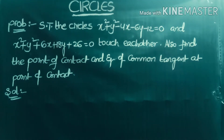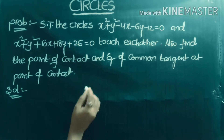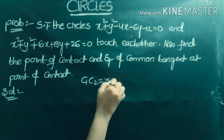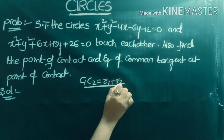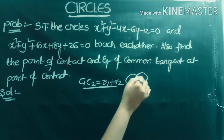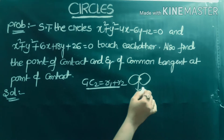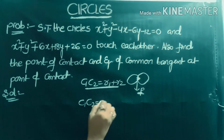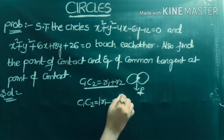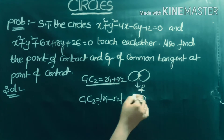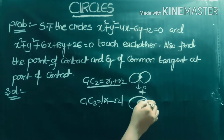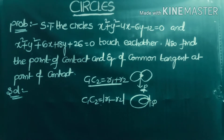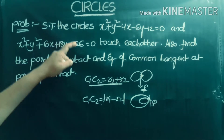To show that the given circles touch each other, we have two cases. First case: if c1c2 = r1 + r2, then the circles touch each other externally, and the point of contact is the internal center of similitude. Second case: if c1c2 = |r1 - r2|, then the circles touch each other internally, and the point of contact is the external center of similitude.